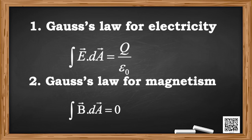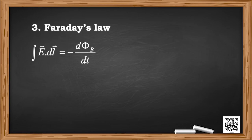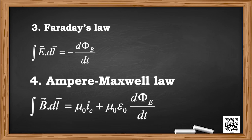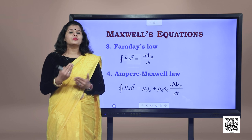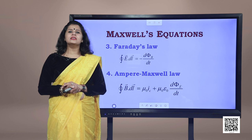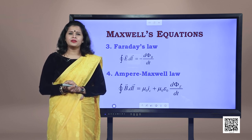The second equation is Gauss's law in magnetism, which states that magnetic monopoles do not exist. The third equation is Faraday's law: the closed integral of E·dL = −dΦ_B/dt. The fourth equation, the Ampere-Maxwell law, is: B·dL = μ₀I_c + μ₀ε₀(dΦ_E/dt). These four fundamental equations explain a diverse range of phenomena — from why a compass needle points north to why a vehicle starts when we turn the ignition key — and solving them reveals the existence of electromagnetic waves.